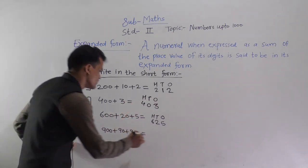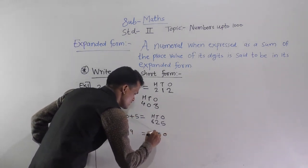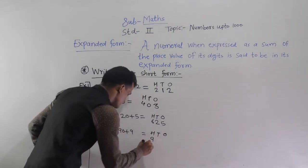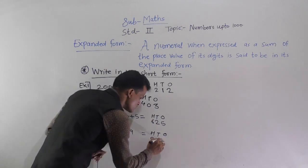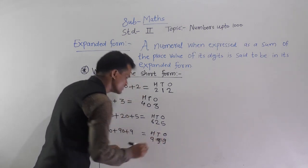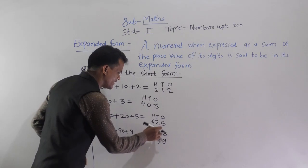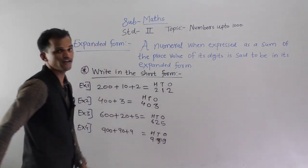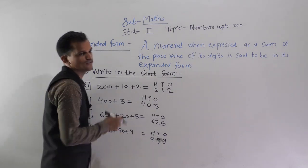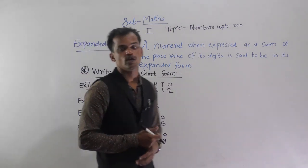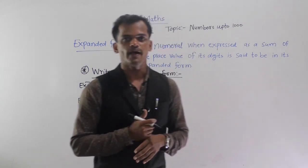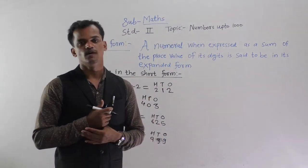Next example with ones, tens, and hundreds places. How many hundreds? 900. How many tens? 90, which is 9 tens. How many ones? 9. So 999 is the short form of 900 plus 90 plus 9. Today we have learnt the expanded form and the short form of numbers.